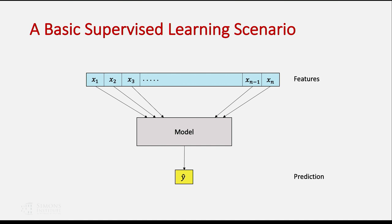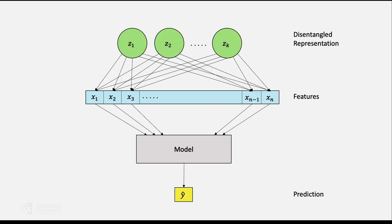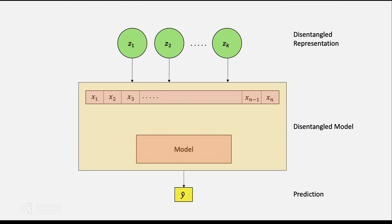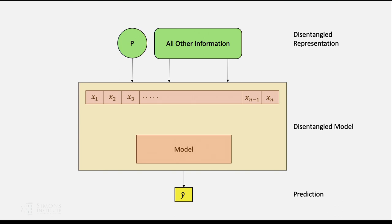In the basic supervised learning scenario, we have features, a model, and it makes a prediction. But in the background, there's a disentangled representation from which my features are generated — somewhere there are these independent factors of variation. I'm going to combine those two processes: one that generates features and one that makes a prediction. Starting with independent factors of variation, I can select one to be my protected information and let everything else be the information not related to my protected information. Now I have a model where I can just look at the direct influence on my feature p.